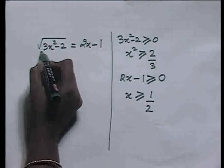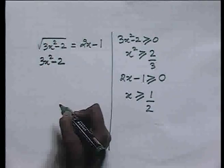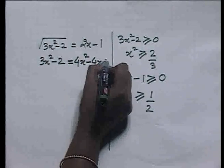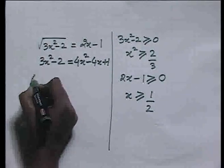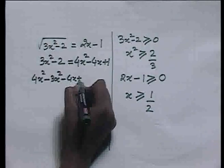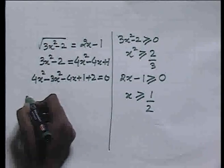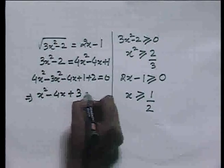Now, how do we remove this radical sign? Let us square both sides of this equation. The left hand side gives us 3x² - 2, and the right hand side becomes 4x² - 4x + 1. Taking these terms to the right hand side, we get 4x² - 4x + 1 + 2 = 0, which simplifies to the final equation x² - 4x + 3 = 0.